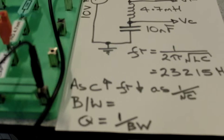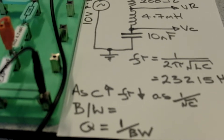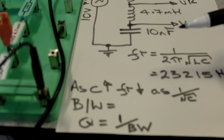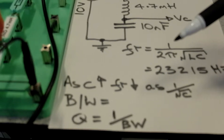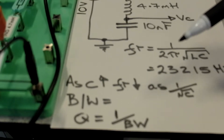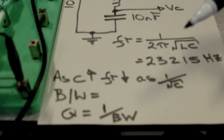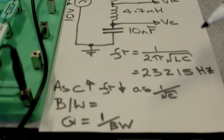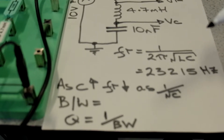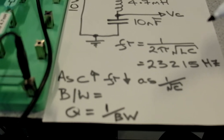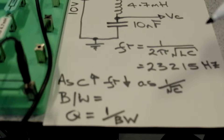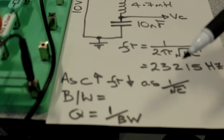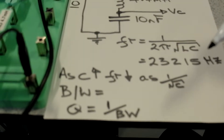What we're interested in for this circuit is the resonant frequency that we've called FR. Looking through the theory, there's a calculation you can work out from your L and C values. We can determine that the anticipated resonant frequency of this circuit is 23,215 hertz.